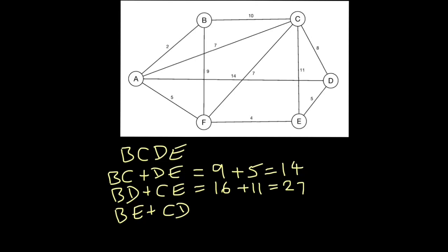To go from B to E, the shortest is 2 plus 5 plus 4, making 11. And to go from C to D, the shortest route is simply that one, which is 8. So that makes 19.